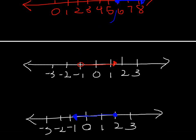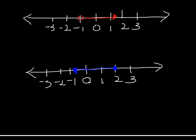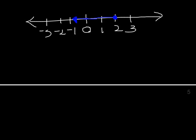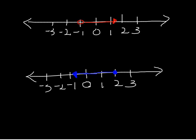Now you're going to be given graphs and have to write the inequality for it. Start with x. The circle is open, so it's not going to be or equal to — it's greater than or less than. Then look at which way the arrow goes. It starts at negative 1 and goes to the right, meaning it's showing all the numbers bigger than negative 1. So x is greater than negative 1 — that's your answer.